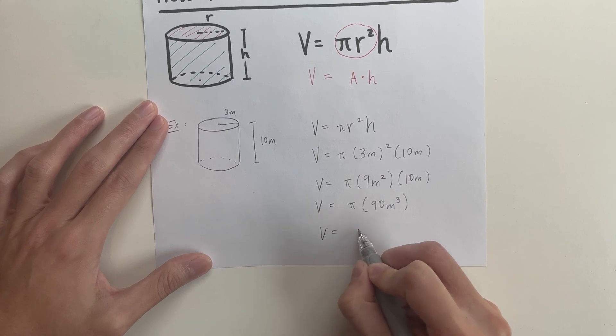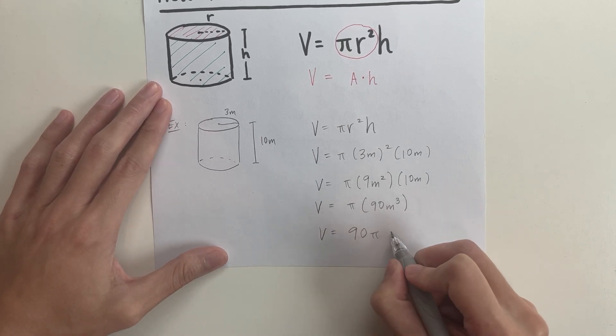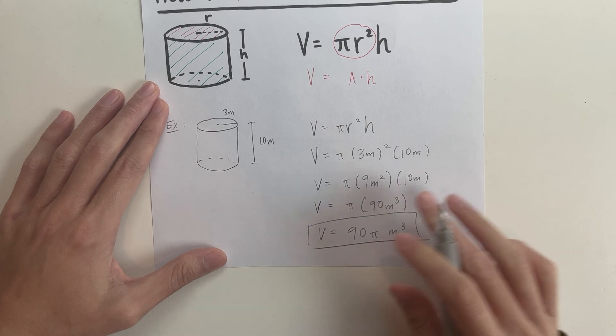So now you can say that the volume is going to be 90 pi, or reorienting it, meters cubed. And that'll be the answer for the volume of this cylinder over here.